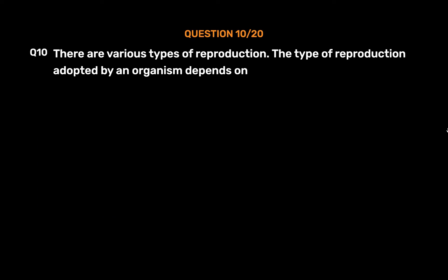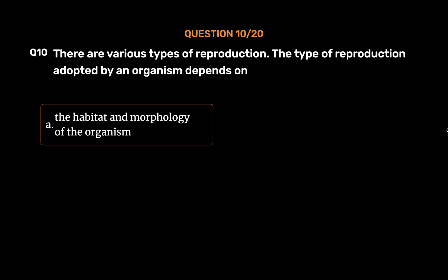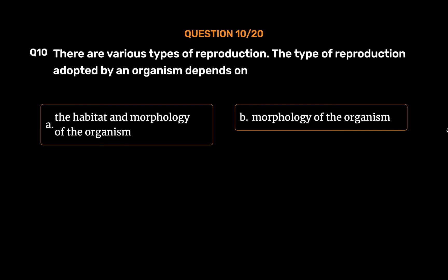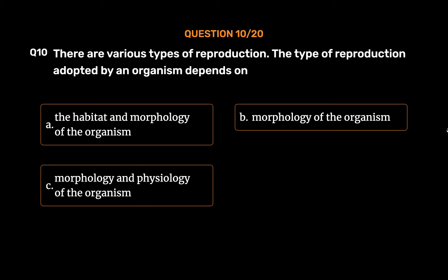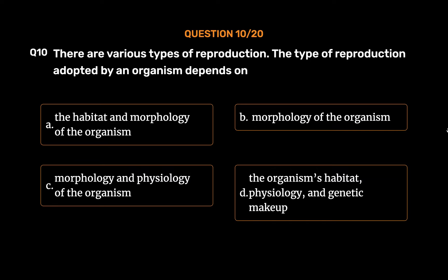Question No. 10: There are various types of reproduction. The type of reproduction adopted by an organism depends on. Option A: The habitat and morphology of the organism. Option B: Morphology of the organism. Option C: Morphology and physiology of the organism. Option D: The organism's habitat, physiology, and genetic makeup.